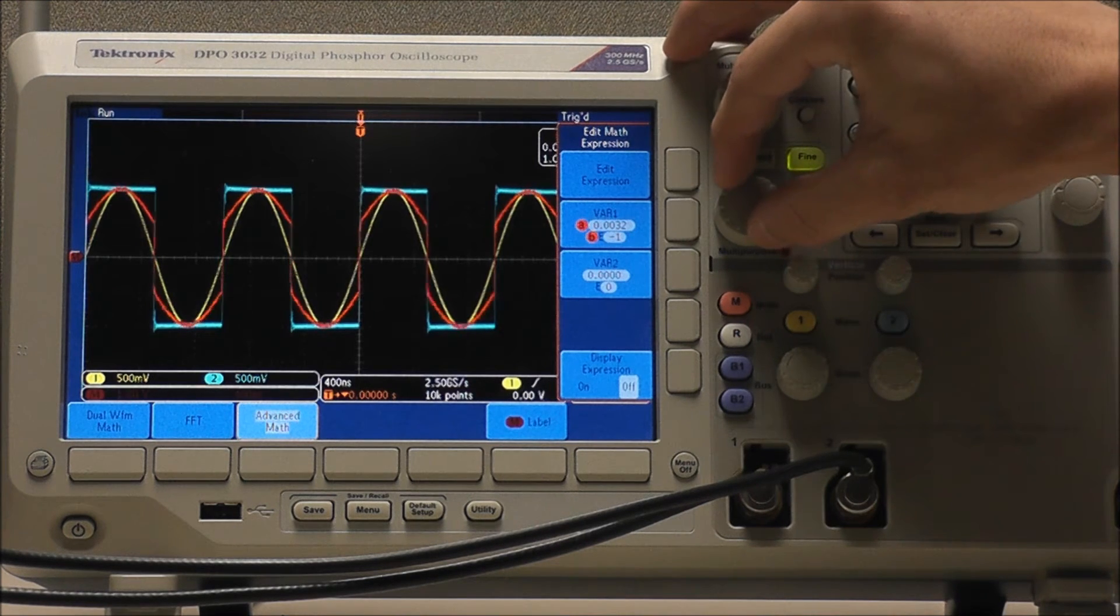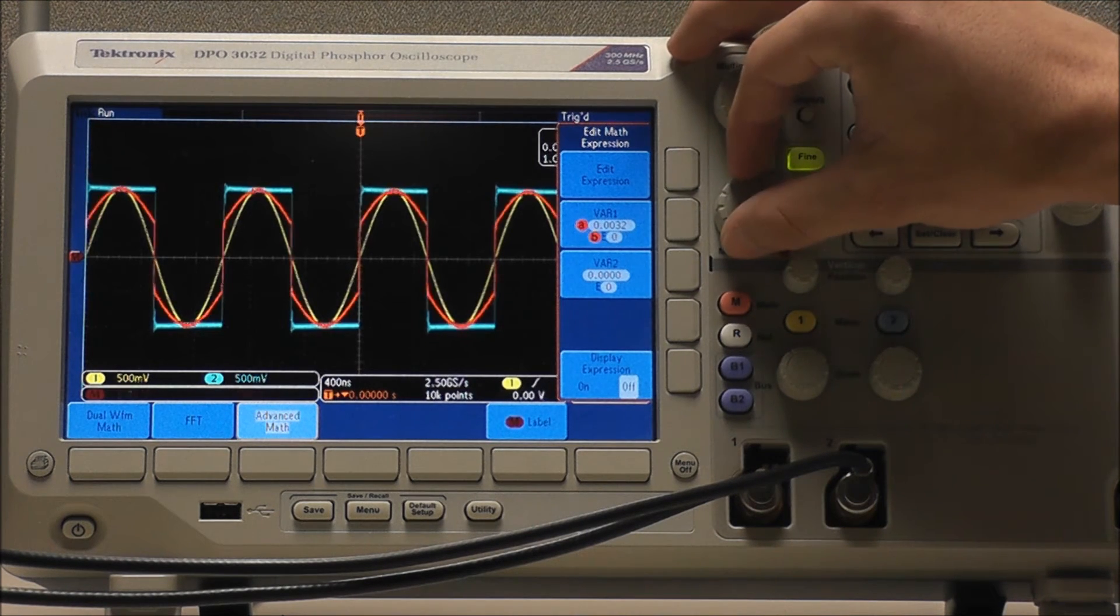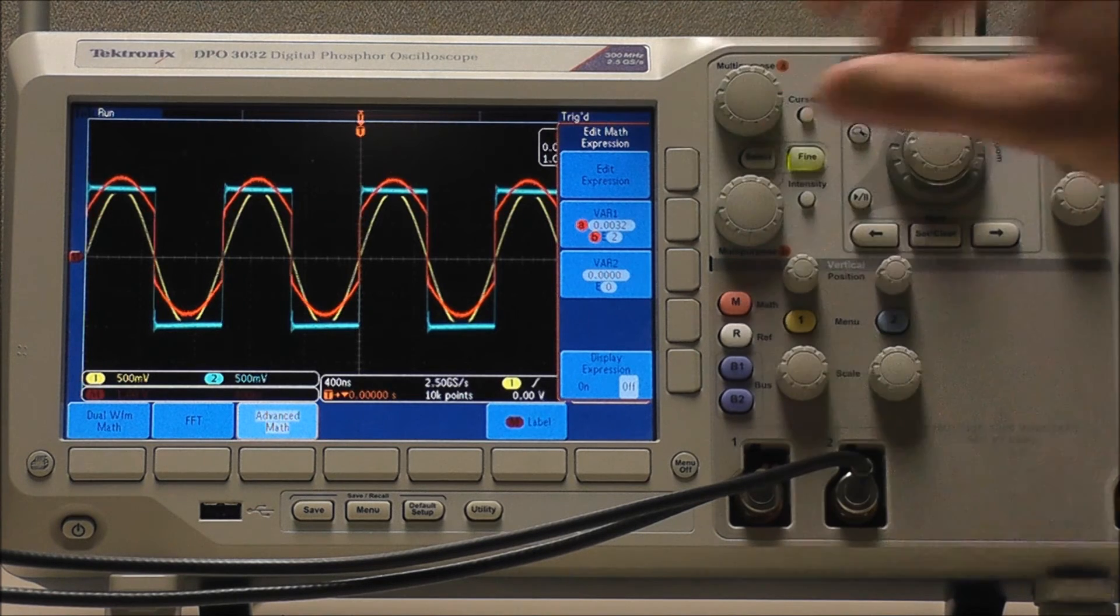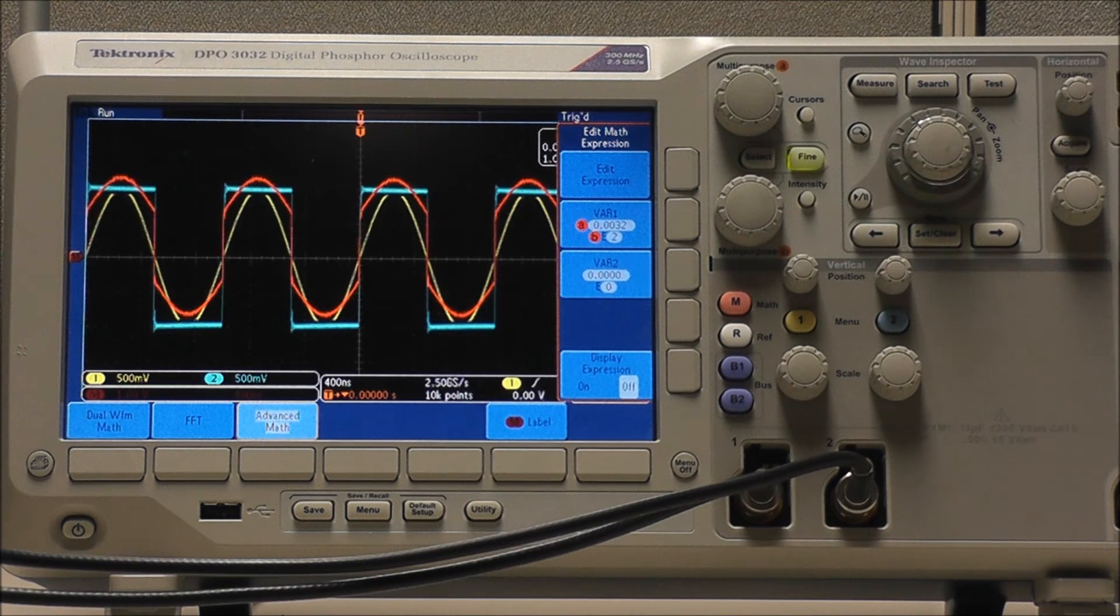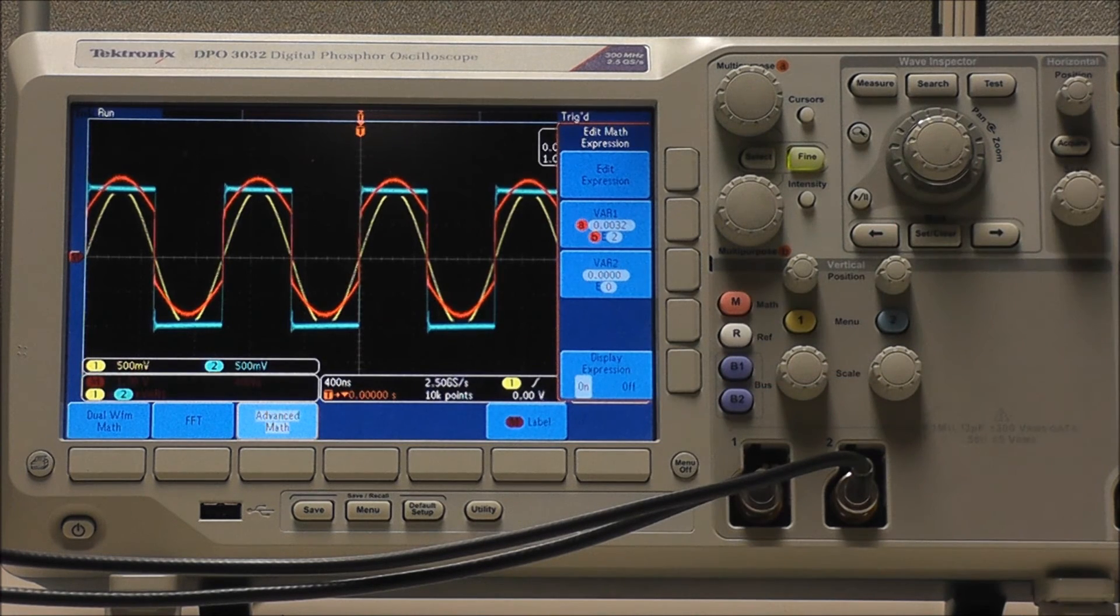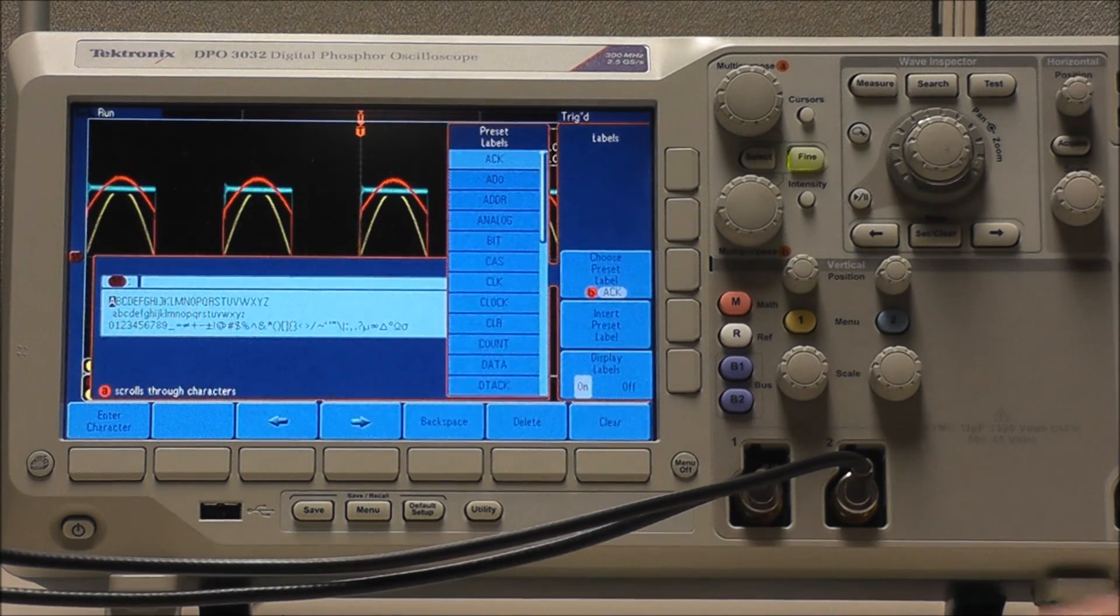Likewise, we can use multipurpose B to select any integer between negative 18 and 18 inclusively as our power. Selecting display expression on will show our equation in the lower left-hand corner of the screen. And selecting math label will allow us to name our math waveform.